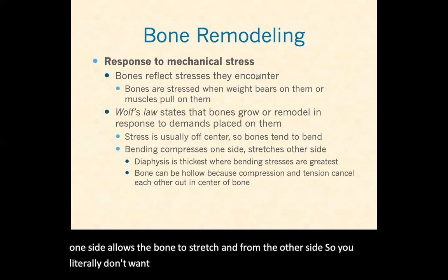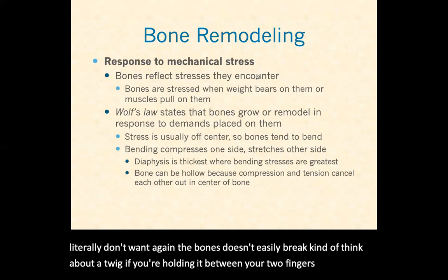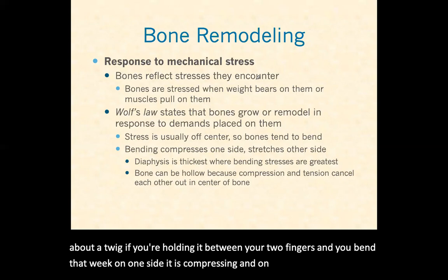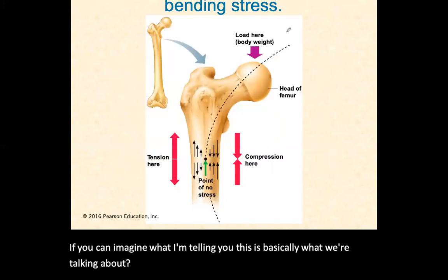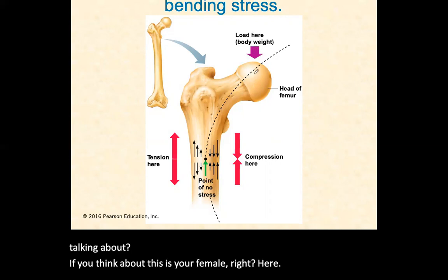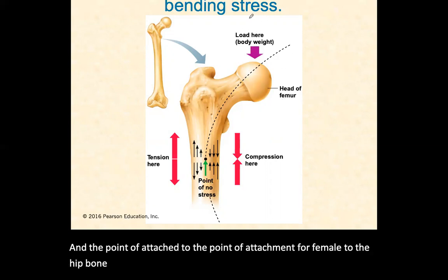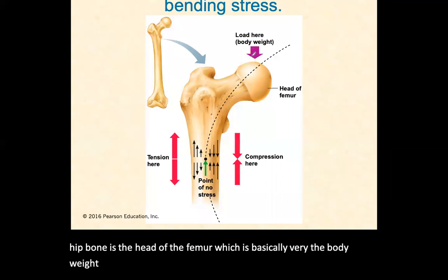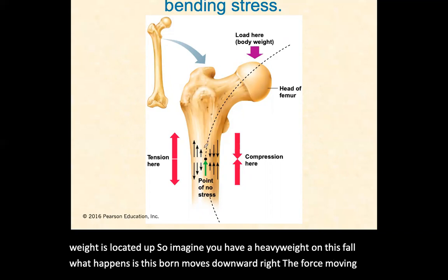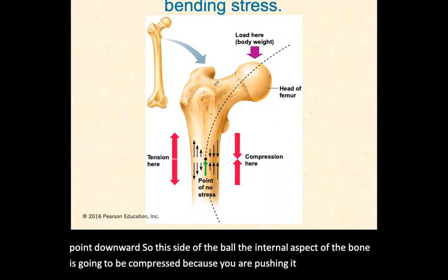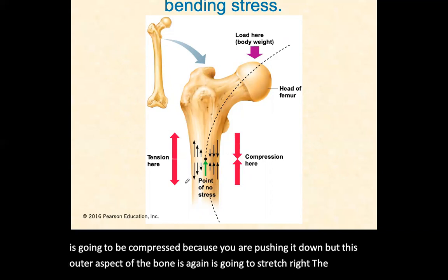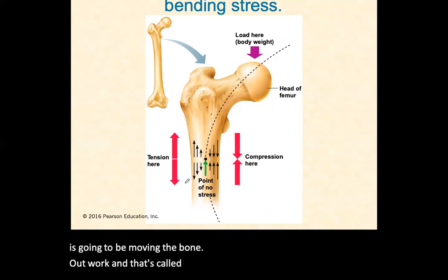Think about the femur. The point of attachment for the femur to the hip bone is the head of the femur, which is basically where the body weight is located. Imagine you have a heavy weight on this bone — the force moves the bone downward. So the internal aspect of the bone is going to be compressed, but the outer aspect of the bone is going to stretch. That's called tension. Like bending a twig between your two fingers: one side compresses and the outside stretches.